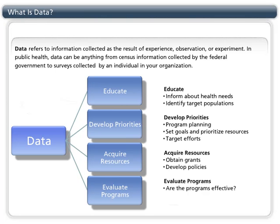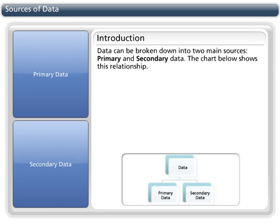Now that we have an idea of how we can use data in public health, let's look at two sources of data. Data can be broken down into two main sources, primary and secondary data. The chart below shows this relationship.